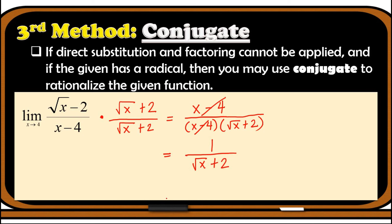We can now apply direct substitution. Replace x with 4: we have 1 over the square root of 4 plus 2. The square root of 4 is 2, so this gives us 1 over 2 plus 2, which equals 1 over 4.